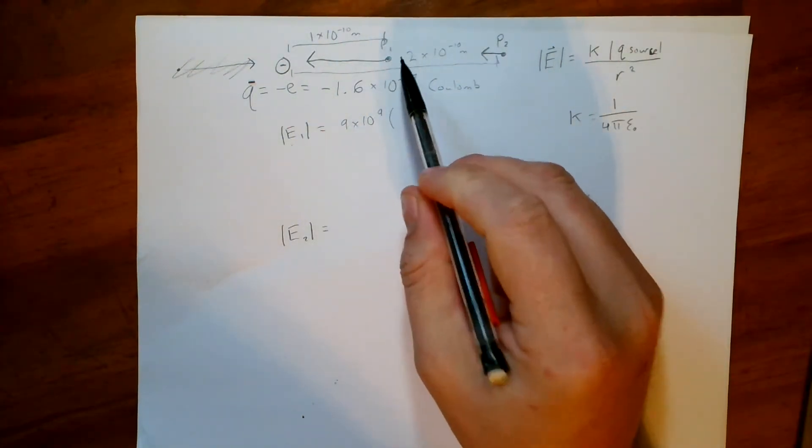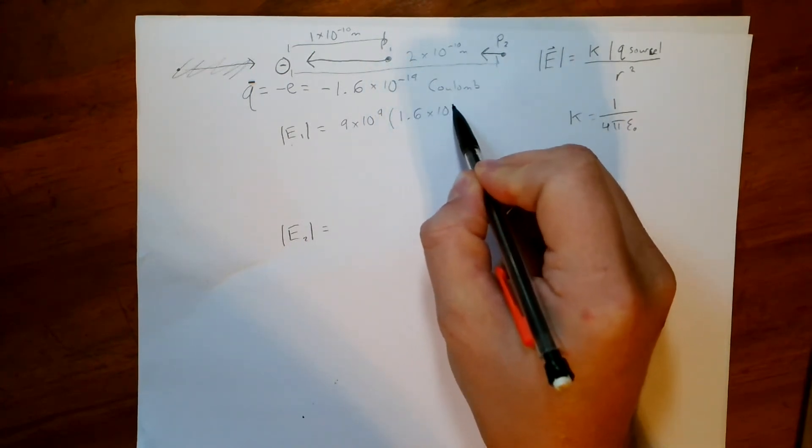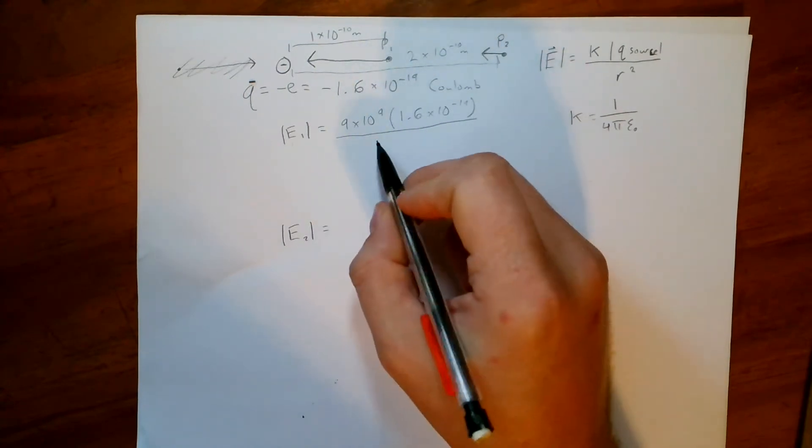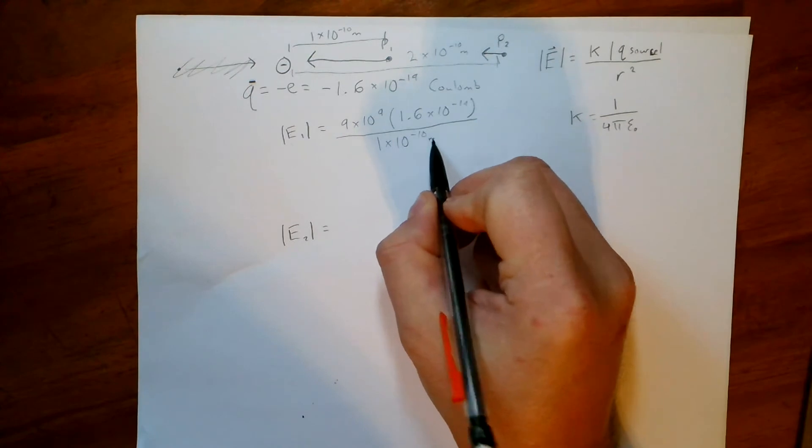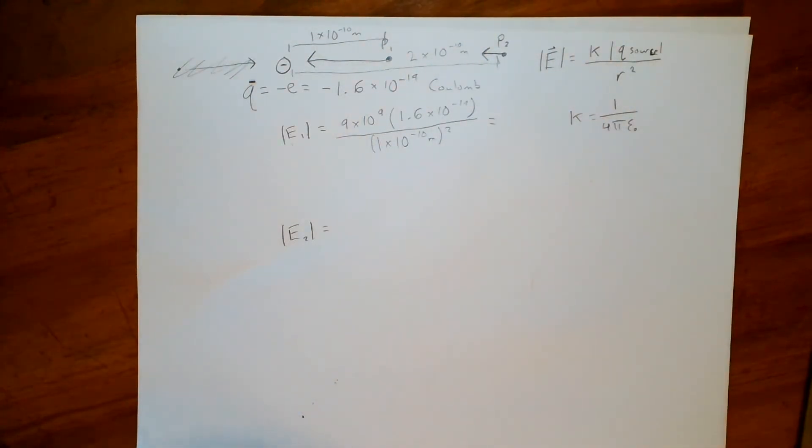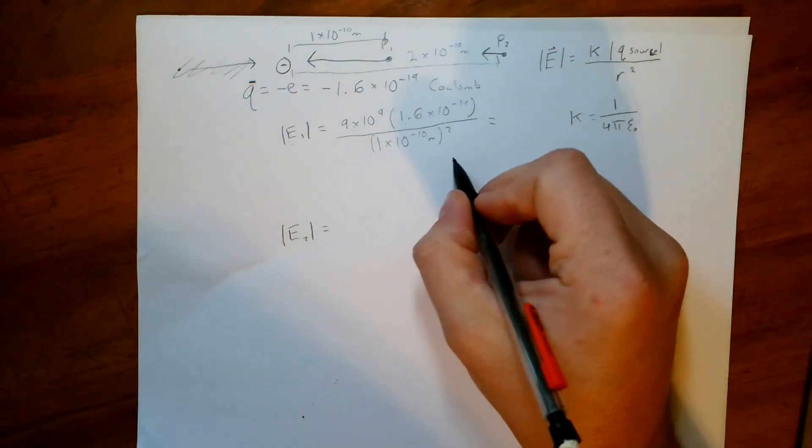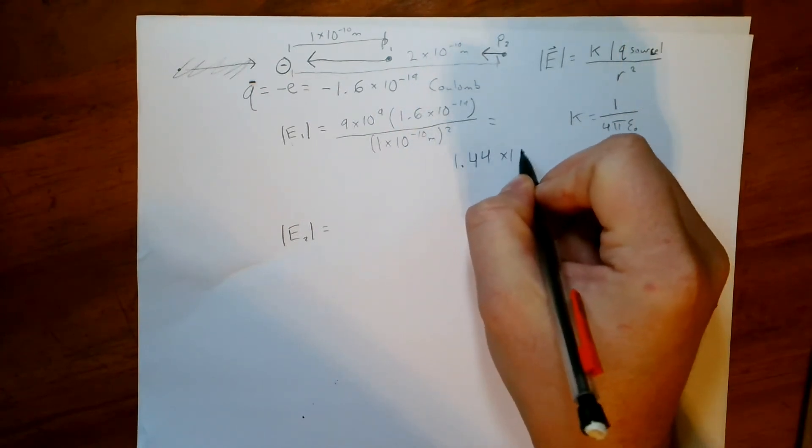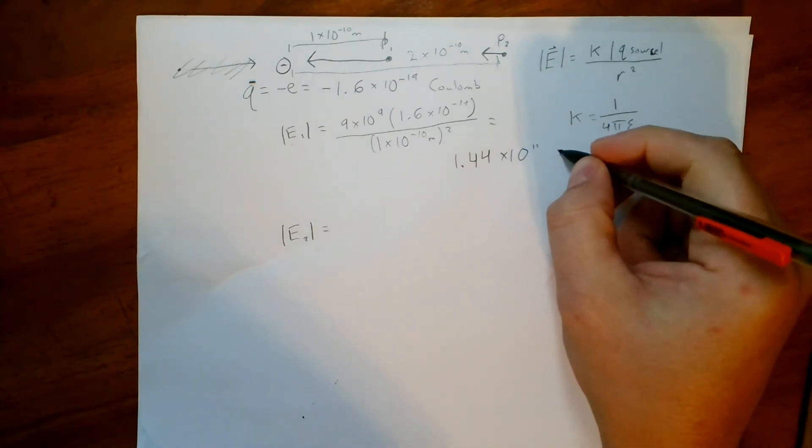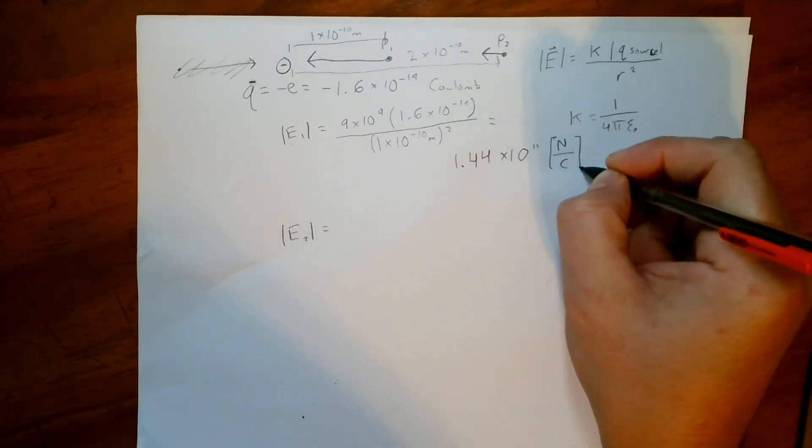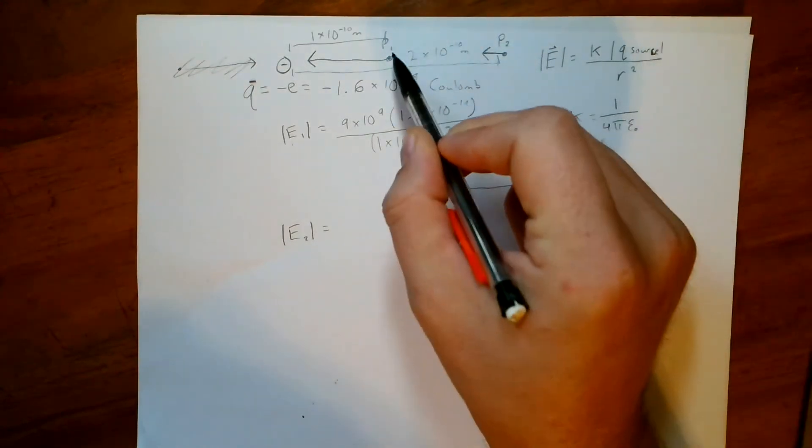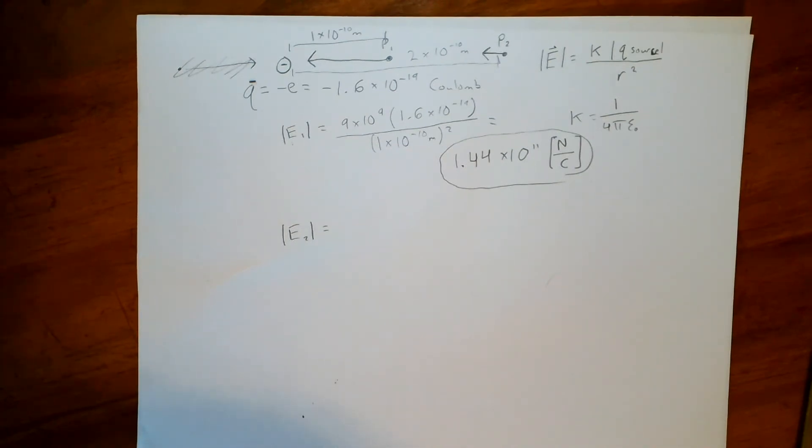And we're going to multiply that by the magnitude of our charge here. 1.6 times ten to the negative 19 Coulombs. And we're going to divide that by our distance, which is squared. One times ten to the negative ten meters squared. And let's see what we get. So I got 1.44 times ten to the eleventh power. And this is the electric field strength. So we measure it in newtons per Coulomb. Remember, the electric field strength is a measure of the force per unit charge. How much force you would have if you placed a charge there at position one.